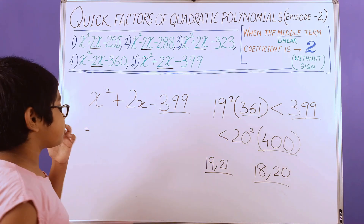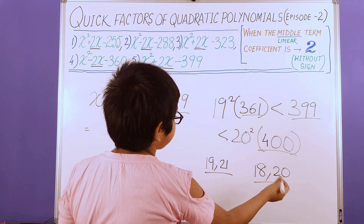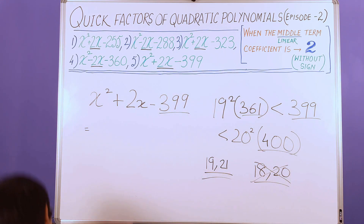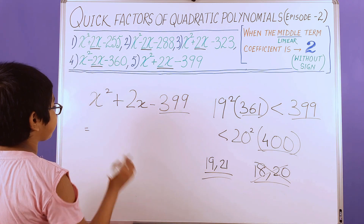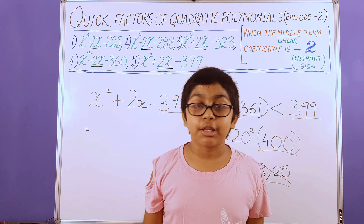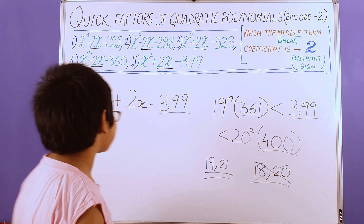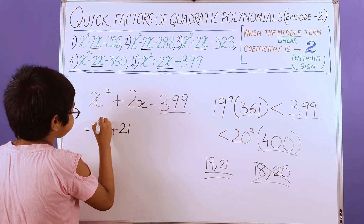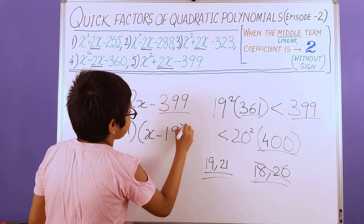We have an odd number, so we need a product of two odd numbers. The even pair goes out and the odd pair — 19 and 21 — goes in. We have a positive sign for 2x, which tells us we write the positive sign for the bigger number and the negative sign for the smaller number. So accordingly, we get (x + 21)(x − 19).